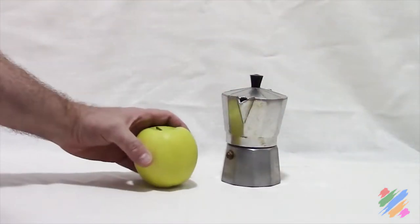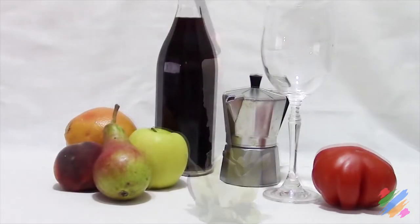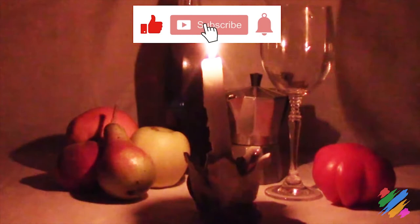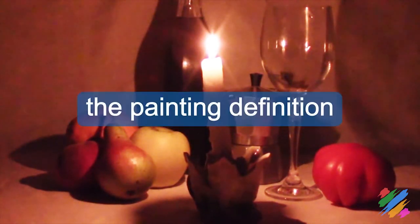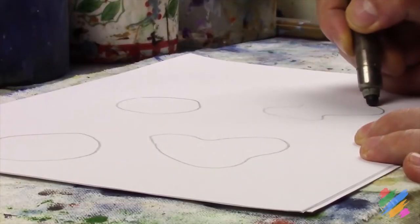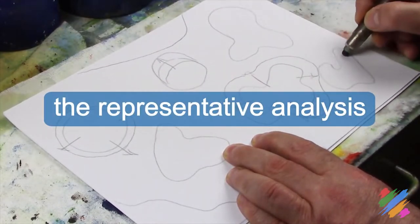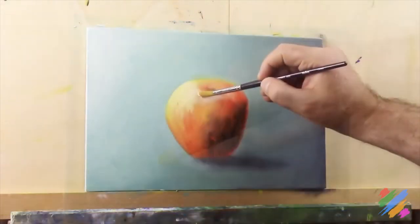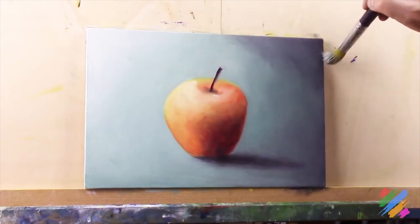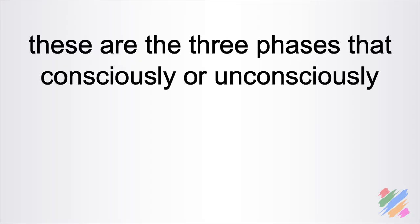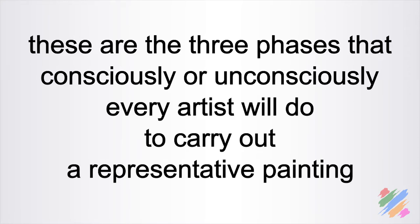In this video, we are going to start seeing the procedure to carry out a representative or figurative painting. We will divide this procedure into three phases: the first is what we will call the painting definition; the second, already introduced in the last video, is the representative analysis; and the last is the action itself of painting what we have previously decided. These are the three phases that, consciously or unconsciously, every artist will do to carry out a representative painting.